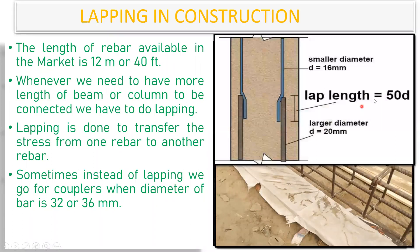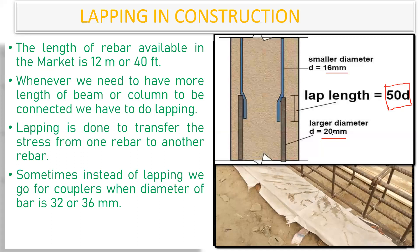So: lap length = 50 times the diameter of the bar. If the top bar is 16 mm and the bottom bar is 20 mm diameter, which diameter do we use in the formula? IS 456:2000 says use the smaller diameter, but IS 13920 (ductile detailing) says use the larger diameter. To be on the safer side, always go with the larger diameter. Using 20 mm: lap length = 50 × 20 = 1000 mm, that is one meter.